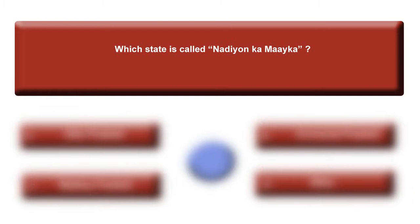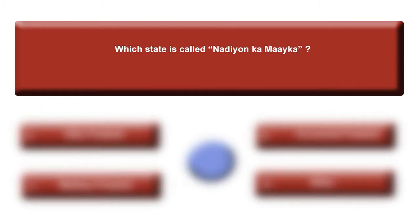Which state is called Nadioka Maika? Very important question. Your options are: option A, Uttar Pradesh; B, Arunachal Pradesh; option C, Madhya Pradesh; or option D, Bihar. Time is up. Answer is C, Madhya Pradesh.